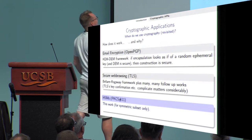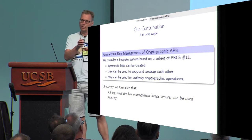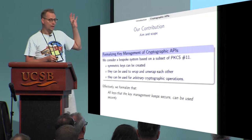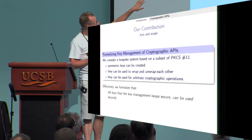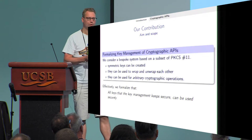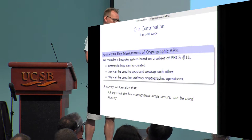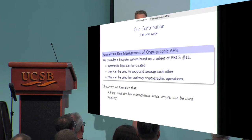So why would this work? That's what we're going to talk about today. Our contribution is that we consider a bespoke system based on a subset of PKCS#11, in a situation where we can create symmetric keys, wrap and unwrap using these keys, and use them for arbitrary cryptographic operations. Because you want to show that keys kept secure by key management can be used securely — and you want to show this once and for all, not separately for authentication, encryption, authenticated encryption, and so on. So there's a level of abstraction needed.